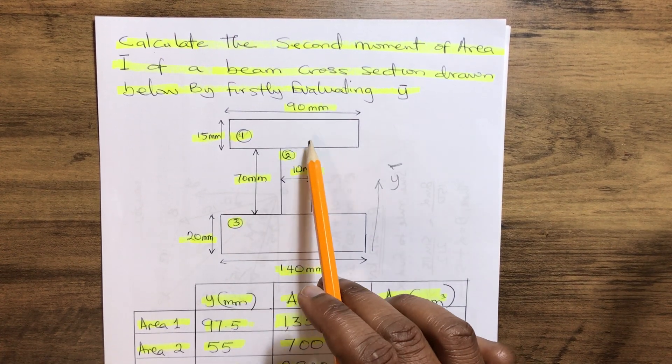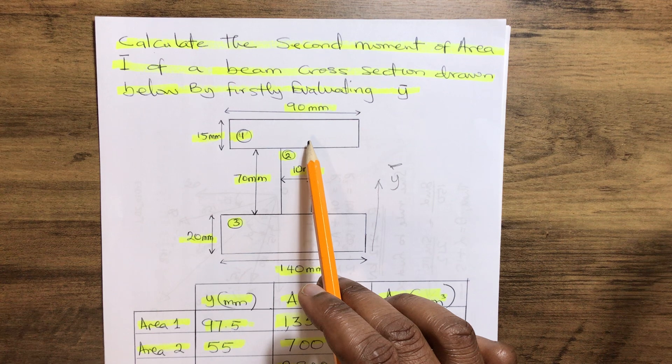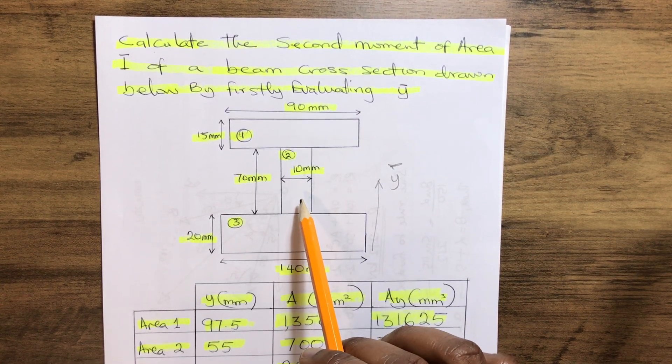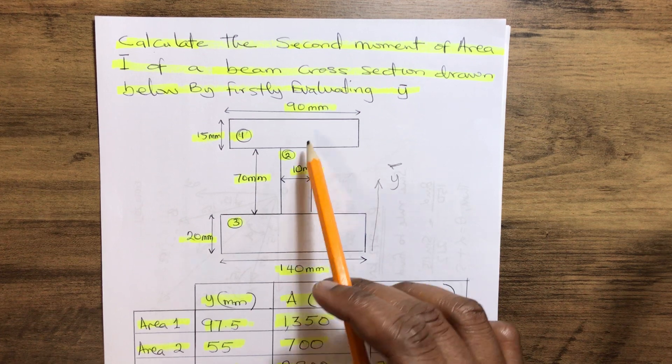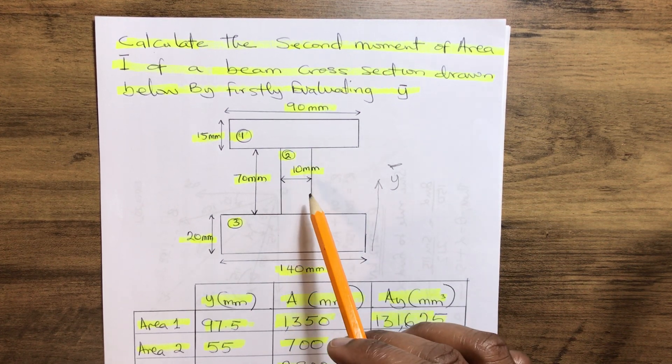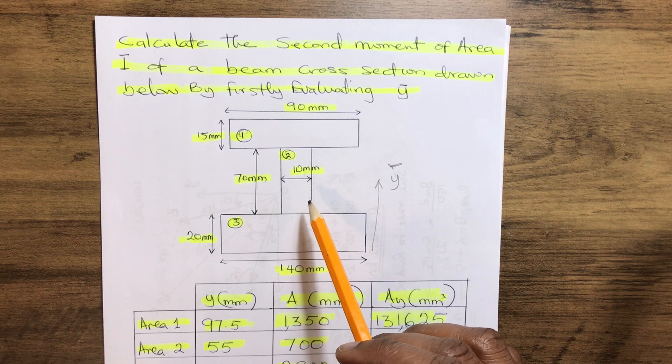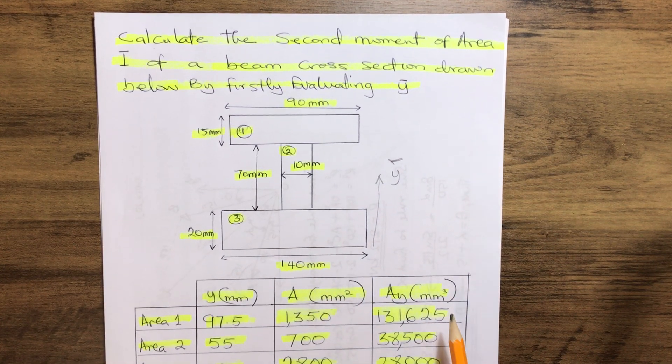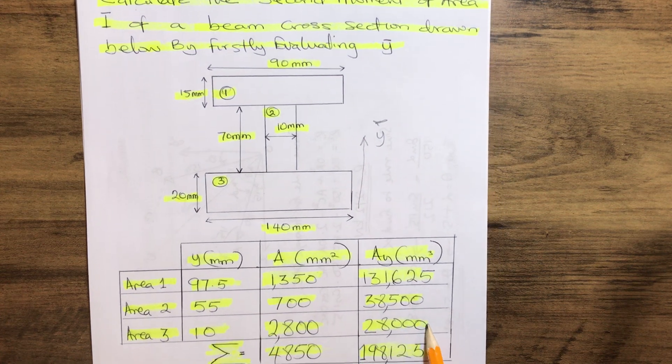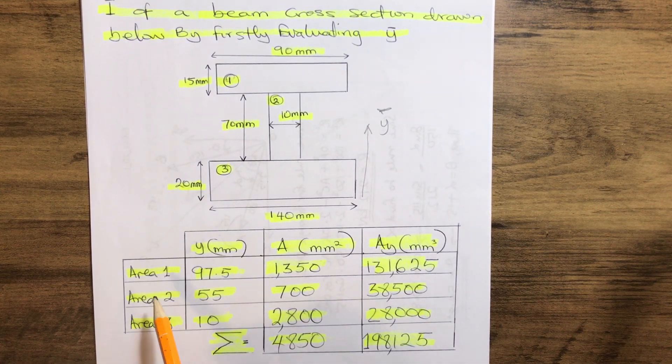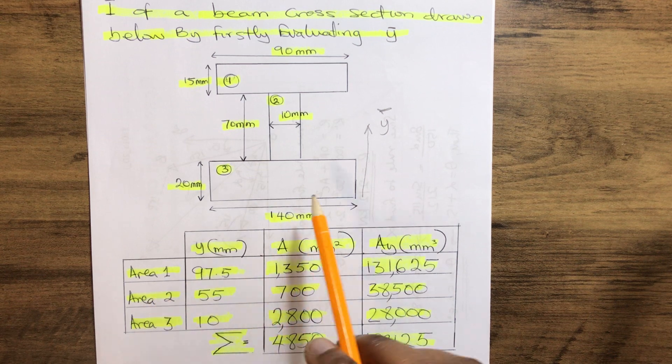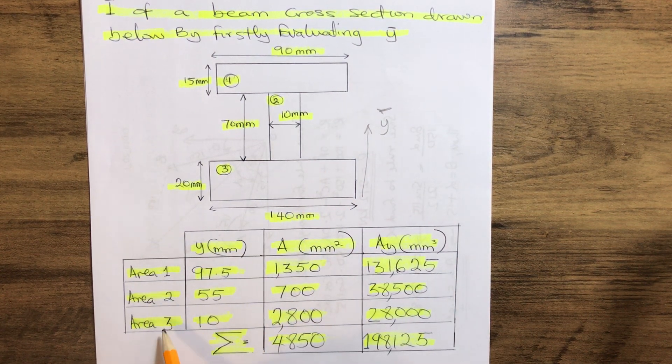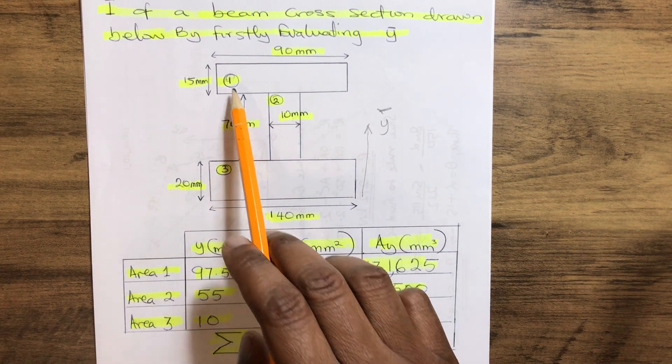Knowing fully that this beam has a shape of an I, we call it an I-section beam. Now in order for us to calculate the Y-bar, first of all we separate the area of each section. We have area 1, area 2, area 3, which has been given.